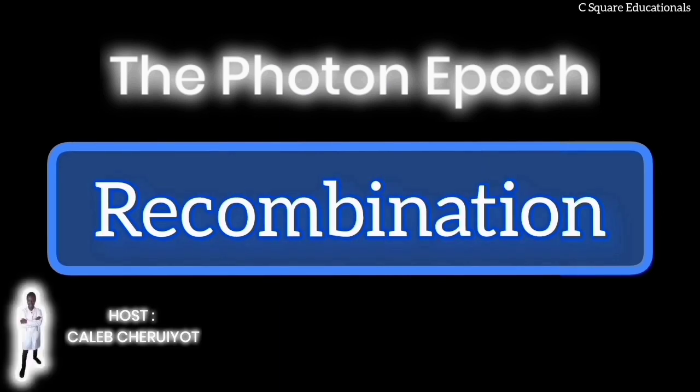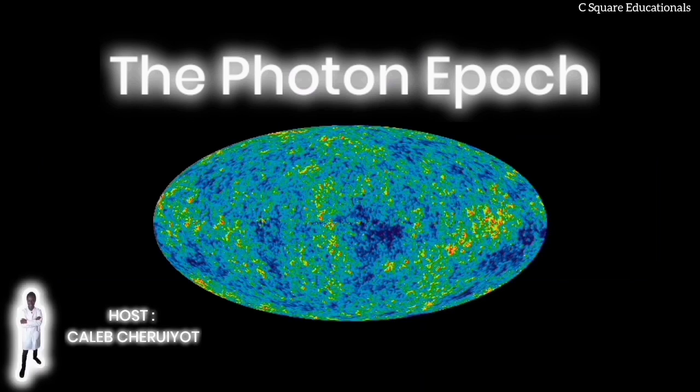Today, the first light of the universe, known as the Cosmic Microwave Background or CMB, can be perceived in all directions. This light was emitted during the formation of the first stable neutral atoms, providing us with valuable insights into the early universe and the origin of atoms.